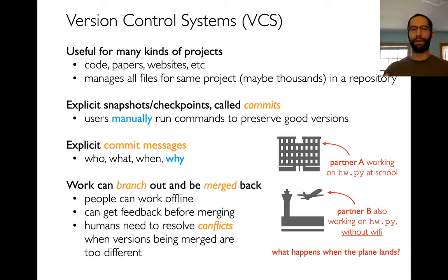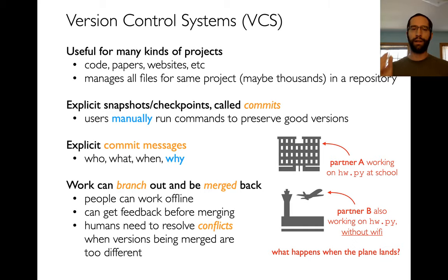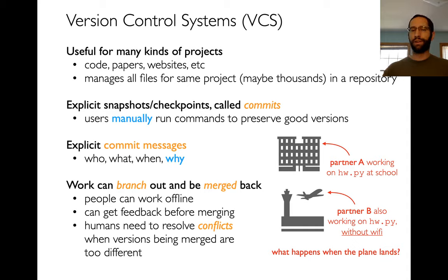All these files belong in something called a repository. For each project, you create a repository, put all your files in there, and start tracking history. Another difference is that I, as the user, decide when to take a checkpoint at a specific point in time. In Google Docs it was automatic, which was easy, but there are lots of reasons to do it manually. If Google chooses a bad snapshot — maybe you were in the middle of writing a paragraph — that's not ideal.